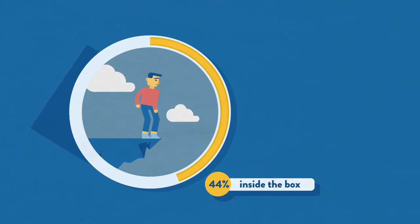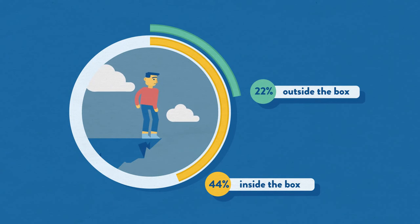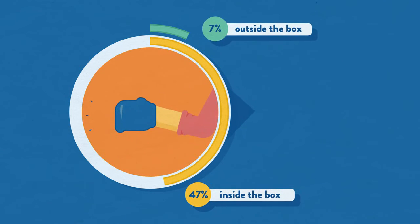44% of those inside the man box reported suicidal thoughts in the previous two weeks, compared to 22% of young men outside the man box. 47% perpetrated physical violence in the past month, compared to 7%.